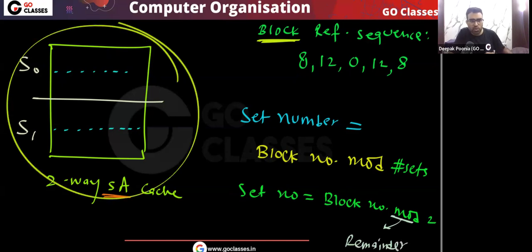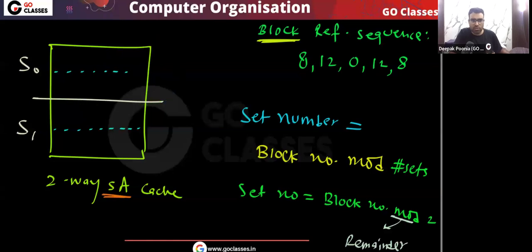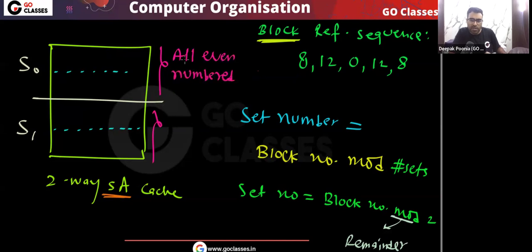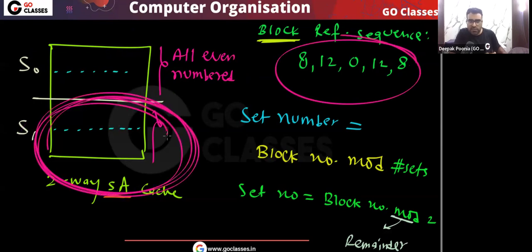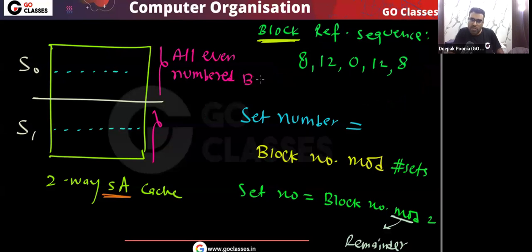Because we have only two sets, we are dividing by two — so we just need to check odd or even. All odd-numbered blocks will go to set one, and all even-numbered blocks will go to set zero. Here you can see all the block numbers in the reference string are even, so all of them will map to set number zero. None of them will map to set one.